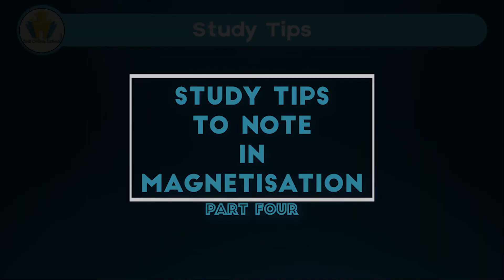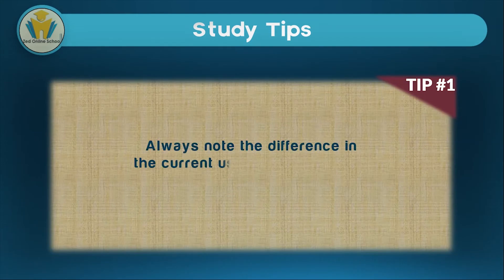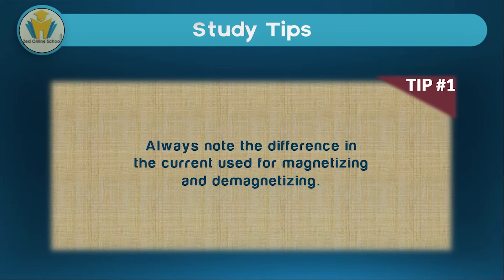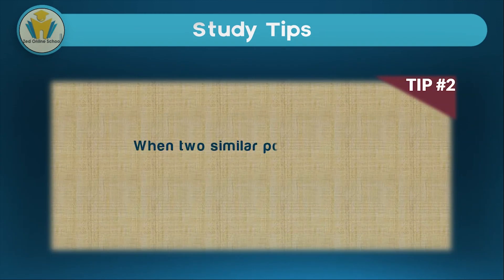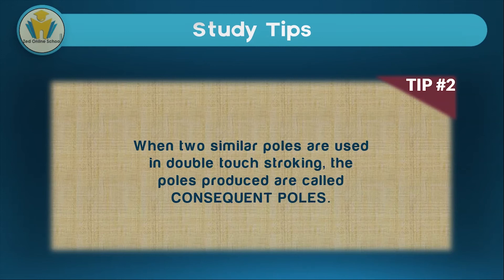What are some things you should take note of? The first thing is the difference in the currents used for magnetizing and demagnetizing — never switch them or confuse them, otherwise you might get questions on the electrical method wrong. Another tip: when two similar poles are used in double-touch stroking, the poles produced are called consequent poles. That means instead of using different poles, if both the left and right use a south pole, the poles produced on both ends will be the same, and because they are the same, they are called consequent poles.